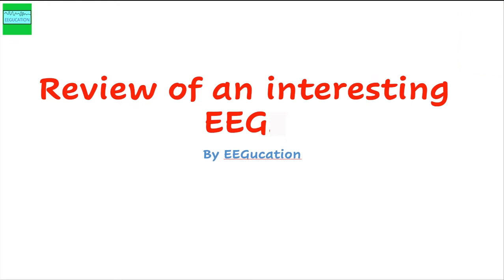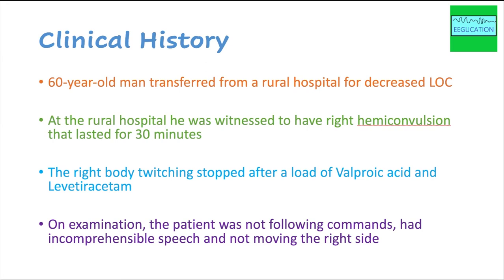Let's start with the clinical history. This is a 60-year-old man who was transferred to our hospital from a rural hospital for decreased level of consciousness. At the rural hospital, he was witnessed to have a right hemi-convulsion that lasted for 30 minutes — twitching of the right side of his face and right arm, continuing on and off. He was given a load of valproic acid and levetiracetam. His twitching had stopped, but the patient was not waking up. On examination at our university hospital, he was not following commands, had incomprehensible speech, and was not moving the right side.